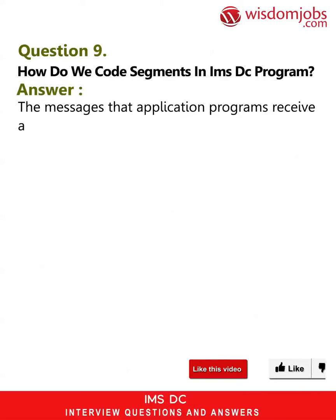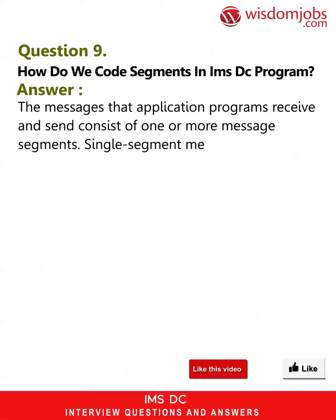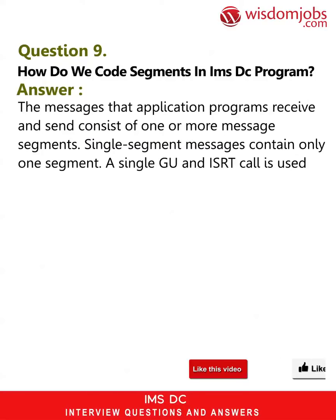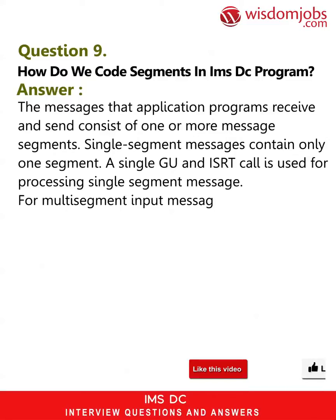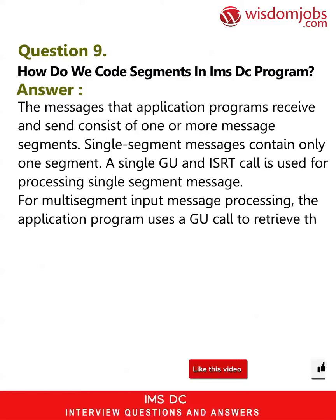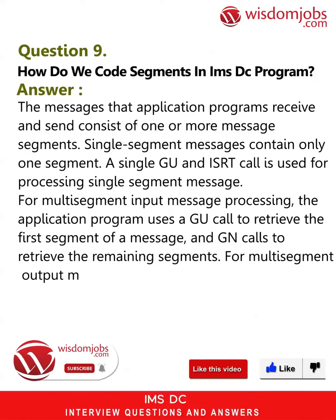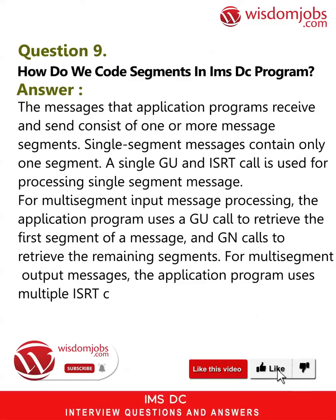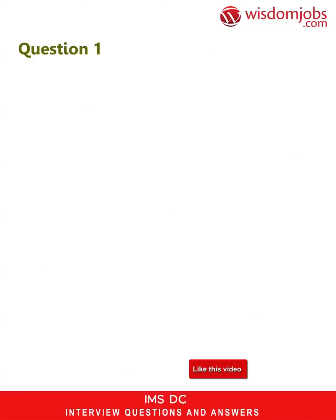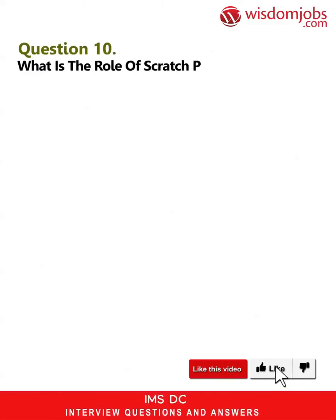Question 9: How do we code segments in an IMS DC program? Answer: The messages that application programs receive and send consist of one or more message segments. Single segment messages contain only one segment — a single GU and ISRT call is used for processing. For multi-segment input message processing, the application program uses a GU call to retrieve the first segment and GN calls to retrieve the remaining segments.